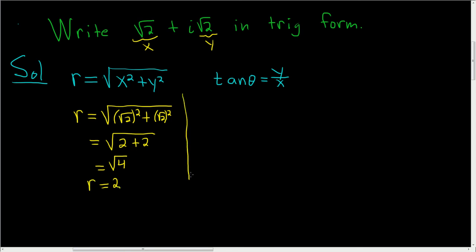To find the angle, we know that the tangent of theta is equal to y over x. Well, y is just the square root of 2 and x is also just the square root of 2. So this is equal to 1. So the tangent of theta is equal to 1. That happens when theta is equal to pi over 4.